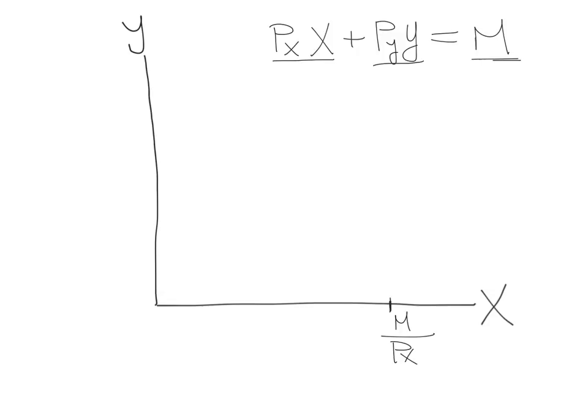And the same applies for Y. If the consumer spends all his money on Y, then he can buy M over PY units of Y.